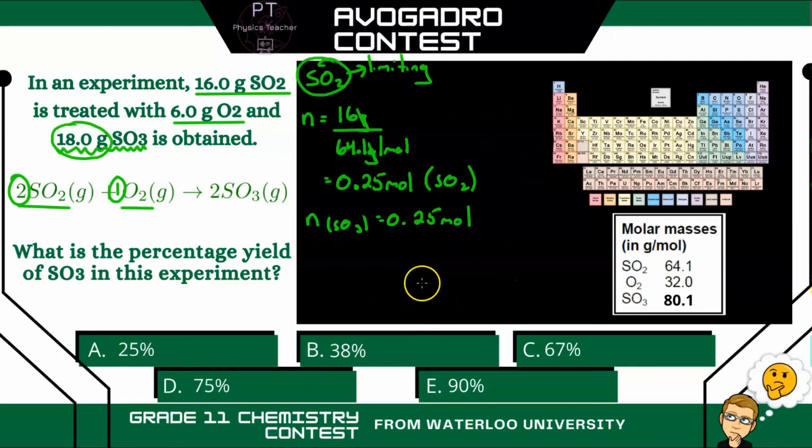So we can figure out how many grams we have, since we know the molar mass of SO3. That means the mass of SO3 is going to be 0.25 moles multiplied by 80.1 grams per mole. So our moles cancel, and we end up with a mass of 20.0 grams of SO3. So that's the theoretical output.